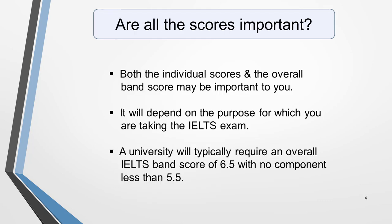For some people, both the individual scores and the overall band score are important. This will depend on the purpose for which you're taking the IELTS exam. For example, a university will typically require an overall band score of 6.5, with no component less than 5.5. If you're taking IELTS for a university application, be aware that requirements differ between universities, and even between different courses at the same university. So, always double check what score is required.